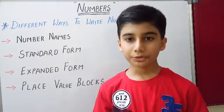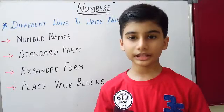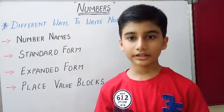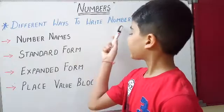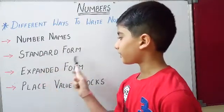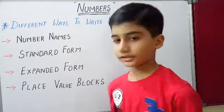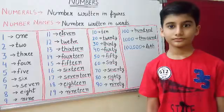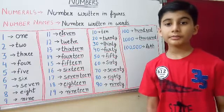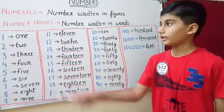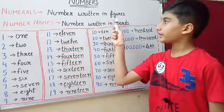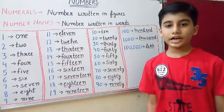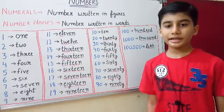Hello friends, welcome back to my YouTube channel RN Records. Today we will discuss about numbers. Numbers are symbols to count and measure things. Now let us see what are the different ways to write numbers: number names, standard form, expanded form, and place value blocks. Do you know the meaning of numerals and number names? Numerals means numbers written in figures, and number names means numbers written in words.